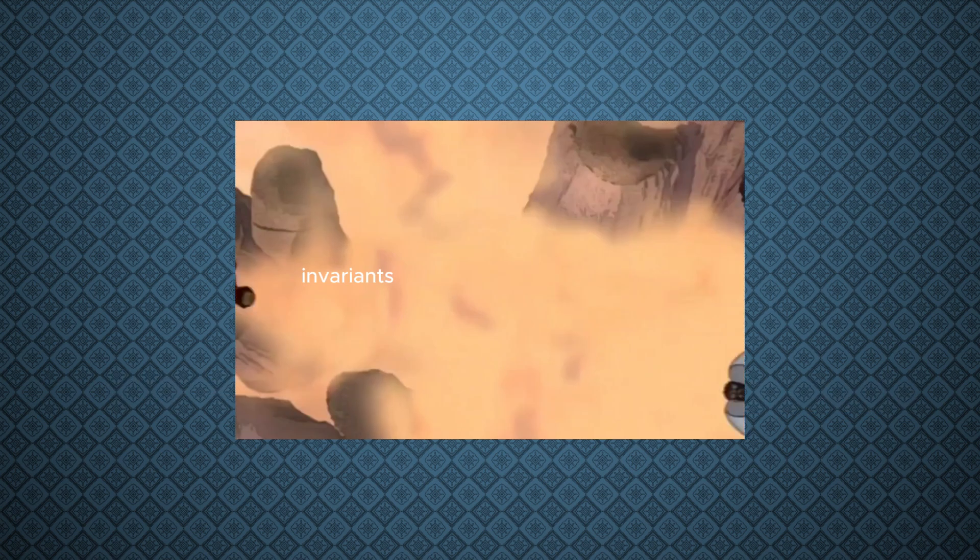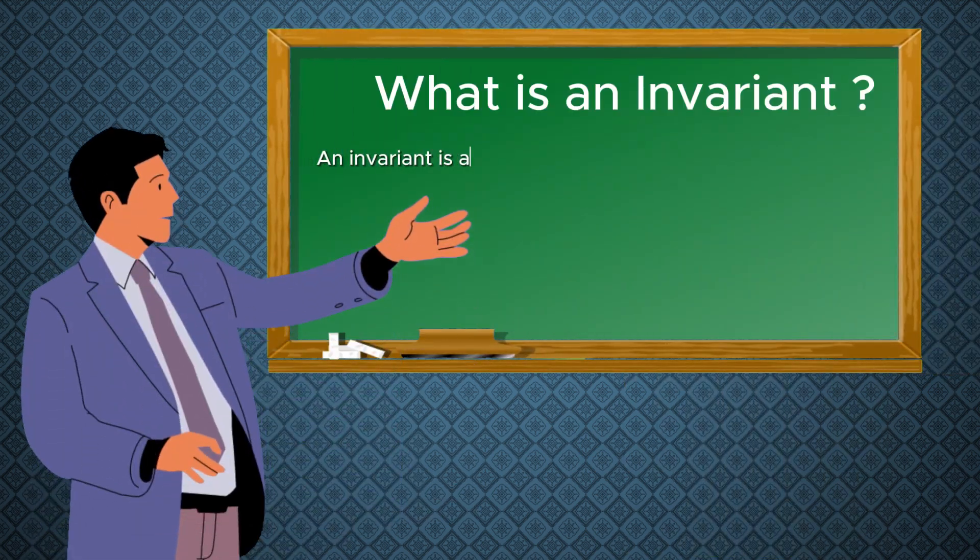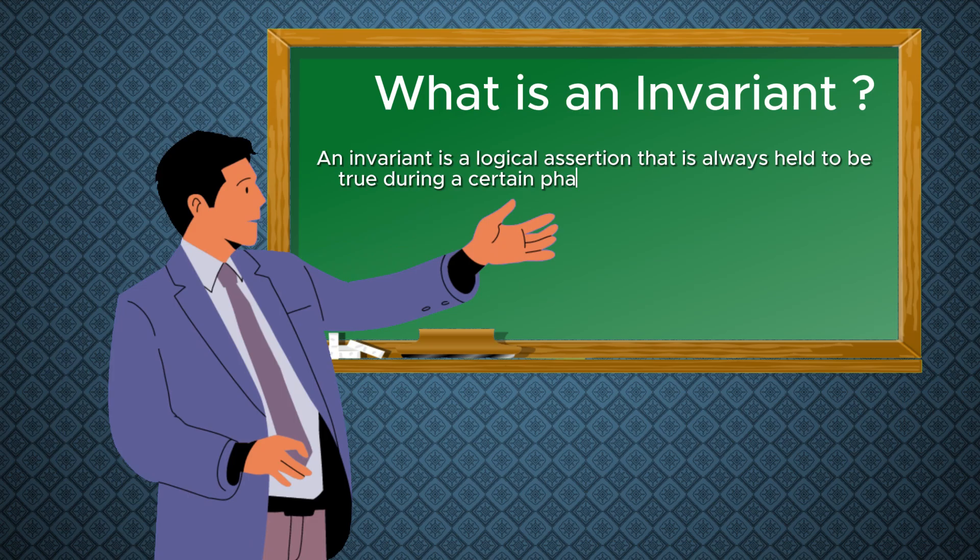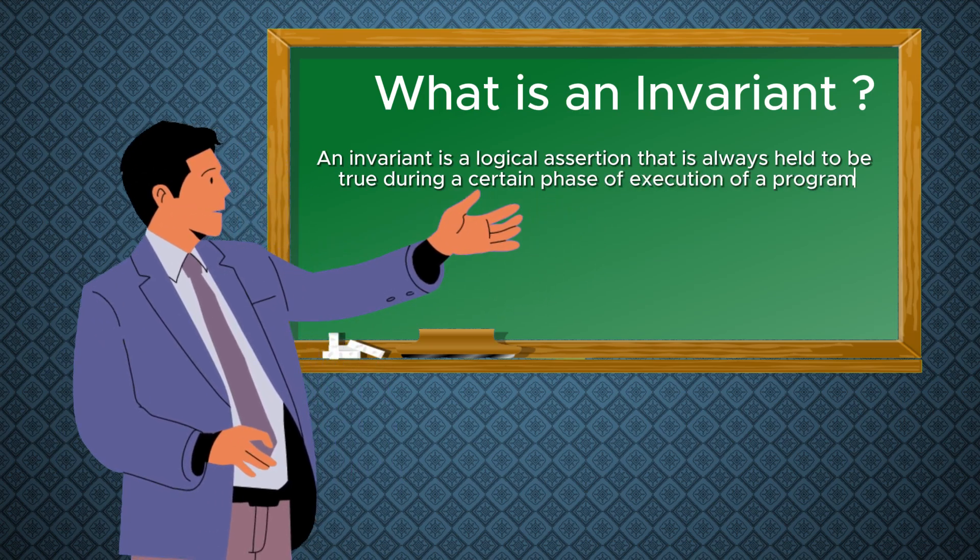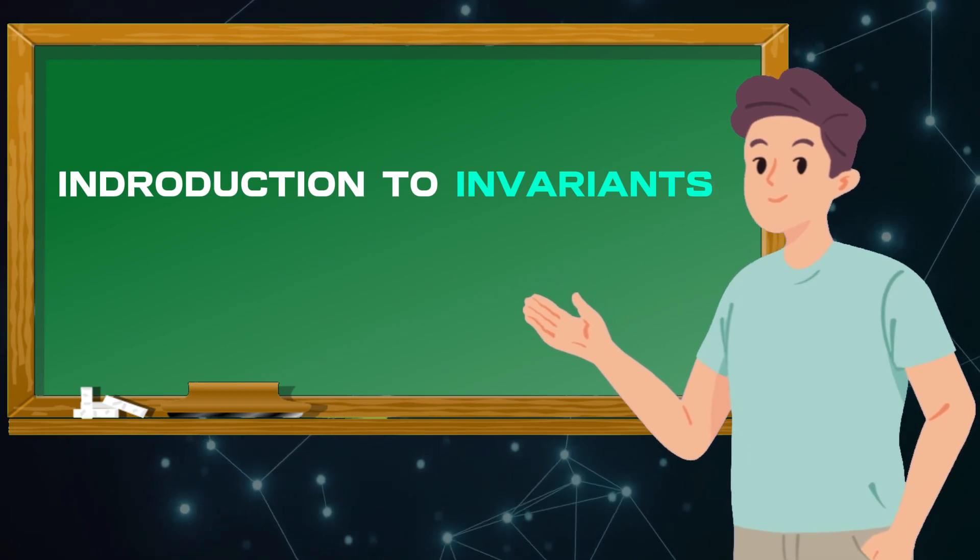And once you model the problem, you are always looking for either the last zero or the first one. And this is where invariants come into action. What is an invariant, you ask? An invariant is a logical assertion that is always held to be true during a certain phase of execution of a program.